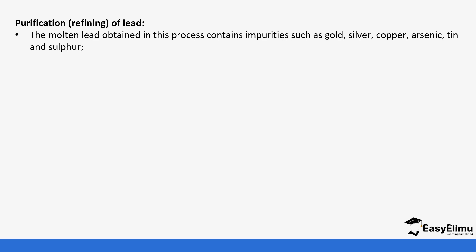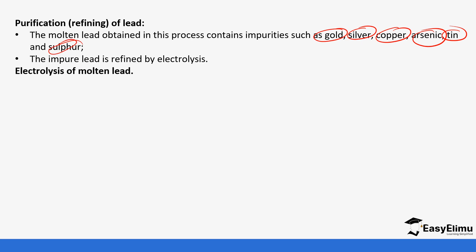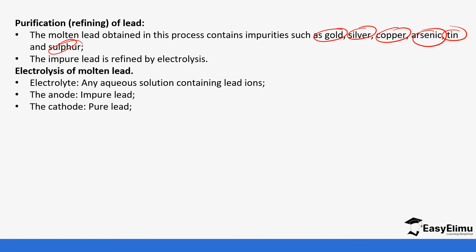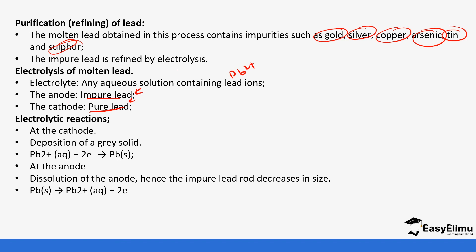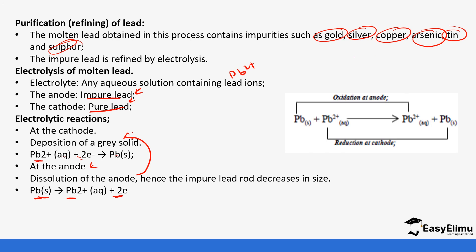Next is purification. The molten lead obtained contains impurities such as gold, silver, copper, arsenic, tin, and sulfur, so it must undergo electrolysis — one of the applications of electrolysis is purification. The electrolytic cell contains an electrolyte which is an aqueous solution containing lead ions. The anode is impure lead and the cathode is pure lead. At the anode, lead atoms are discharged, losing two electrons to form lead ions. Those electrons travel to the cathode where lead ions in solution gain the two electrons to form pure lead solid. This is the overall equation for the purification process.